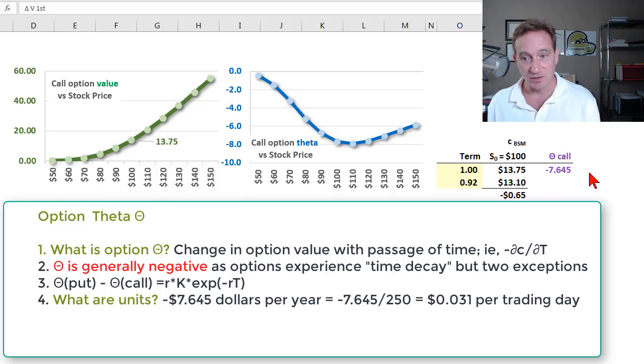In this video, I'd like to illustrate the Greek option theta, which gives us a measure of an option's time decay. I'd also like to illustrate the two exceptions to the general rule that theta should be negative. I'll show you the very simple direct relationship between a call's option theta and a put option's theta. And finally, we want to understand the units of the option theta. In this case, what is negative 7.645? How do we characterize those as units?